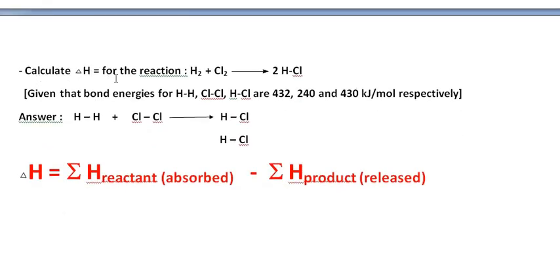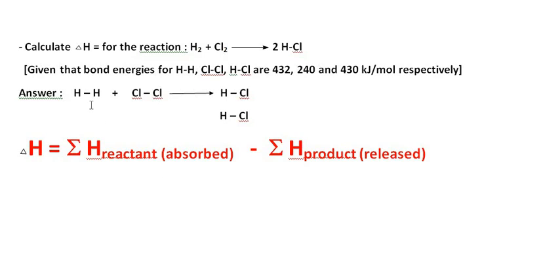For example, if you want to calculate delta H for H₂ + Cl₂ gives 2HCl. These numbers represent the bond energy — the energy required to break the bonds or the energy released when bonds are formed. We draw H₂ as H-H to show the bond which will be broken. Cl₂ as Cl-Cl. 2HCl as HCl and HCl. This bond is broken and needs energy. The bond energy of H-H is 432, so we need 432 kJ/mol to break this bond. The Cl-Cl bond is broken and requires 240 kJ/mol.